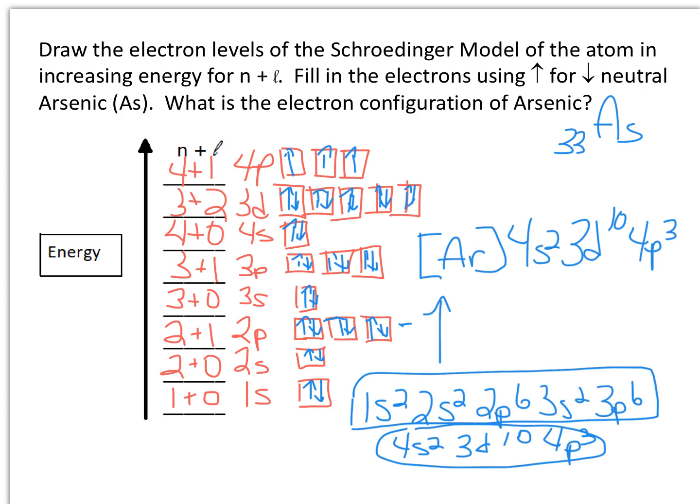And that is how you would, the long way without the periodic table, get the electron configuration of arsenic.